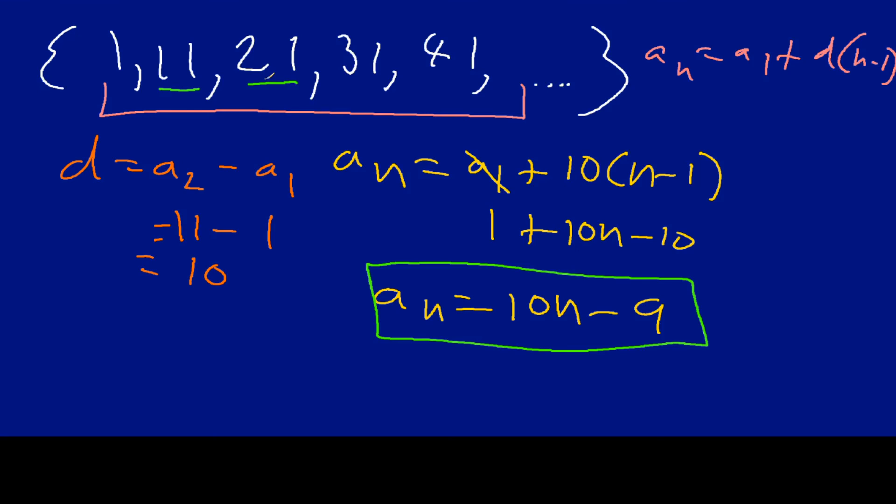So, on this video, we looked at how to find the nth term for an explicit formula for an arithmetic sequence. And so, basically, you take your sequence. You keep in mind your generic formula over here. And you first solve for D. And so, by solving for D, you take two consecutive terms. In this case, we took A2 and A1. And you find the difference.